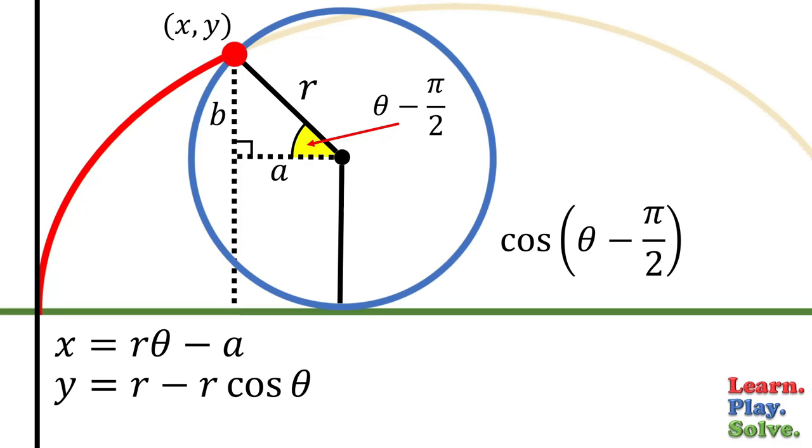Now let's take the cosine of our angle. Cosine is adjacent over hypotenuse, which is a over r.